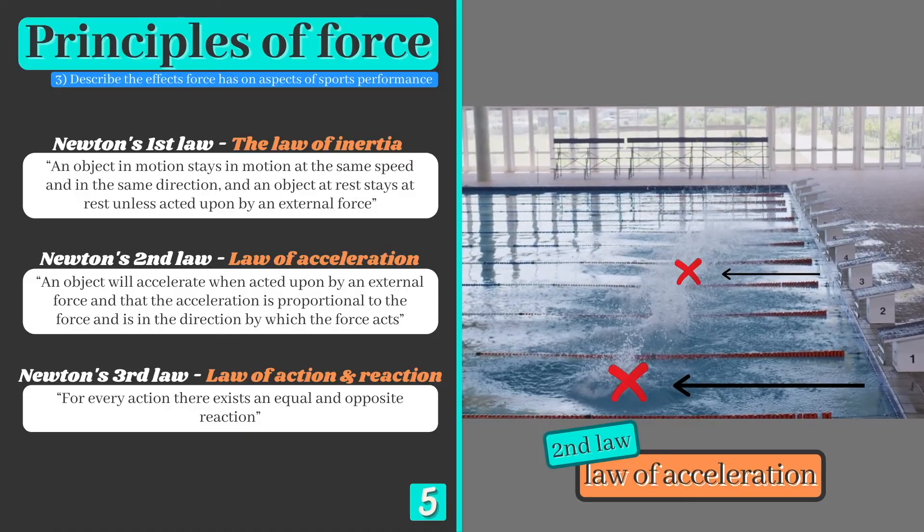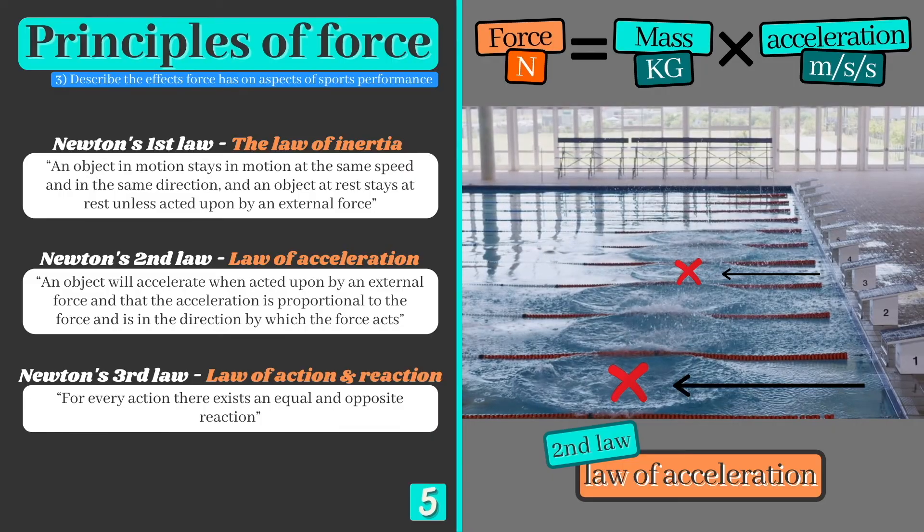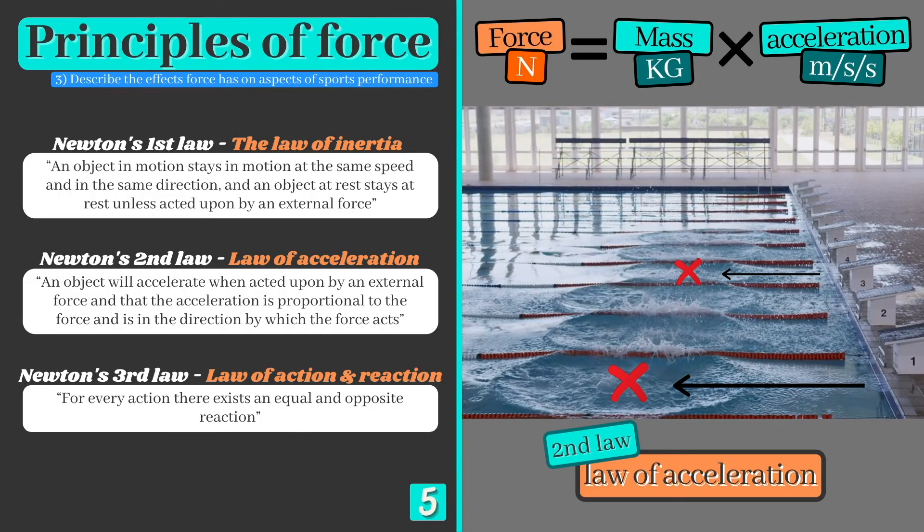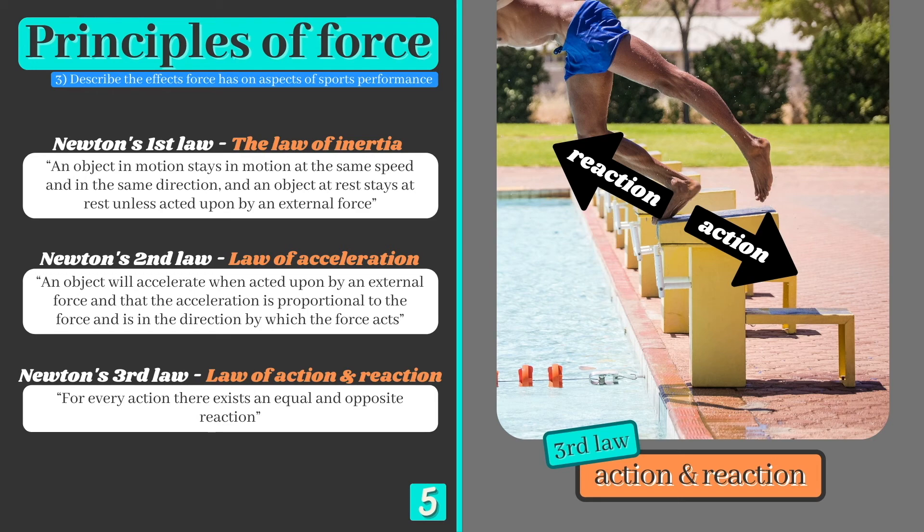If we know the mass of the swimmer and their acceleration, we can calculate how much force they produced using the equation force equals mass times acceleration. Finally, the swimmer applies a force backwards and downwards against the blocks, and the equal and opposite reaction force that results gives them the height and distance they need to gain an advantage from their dive.